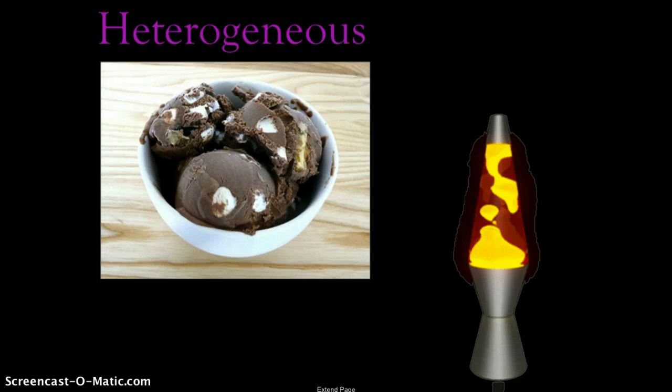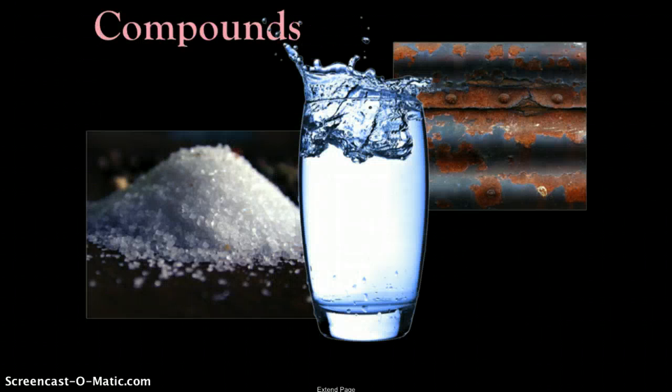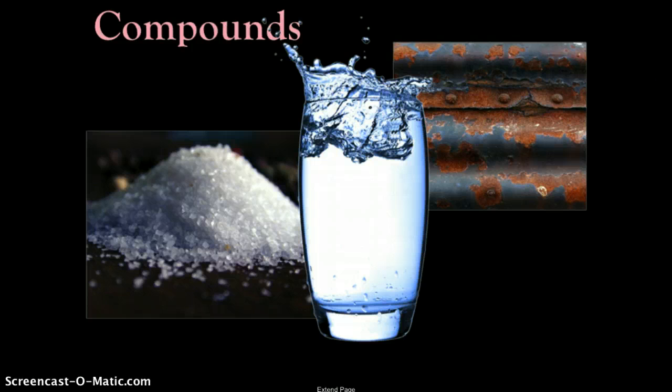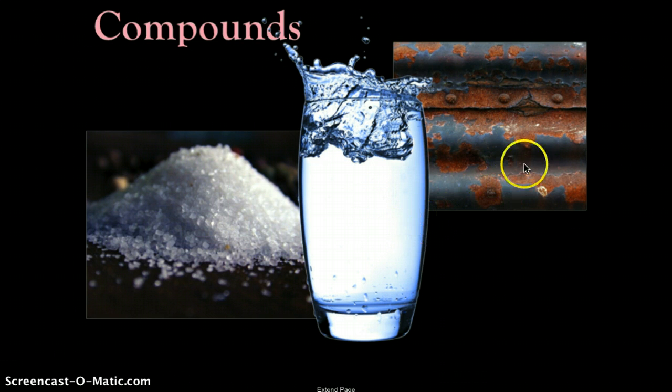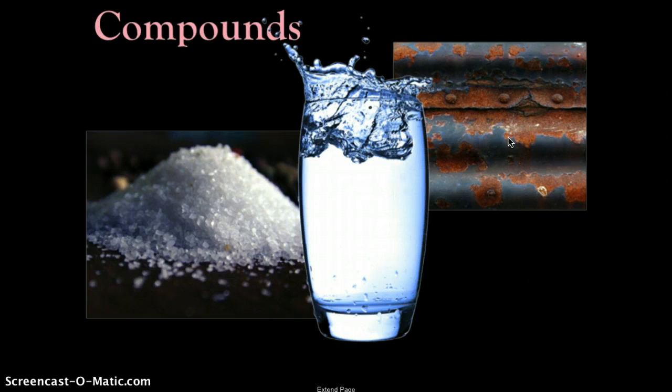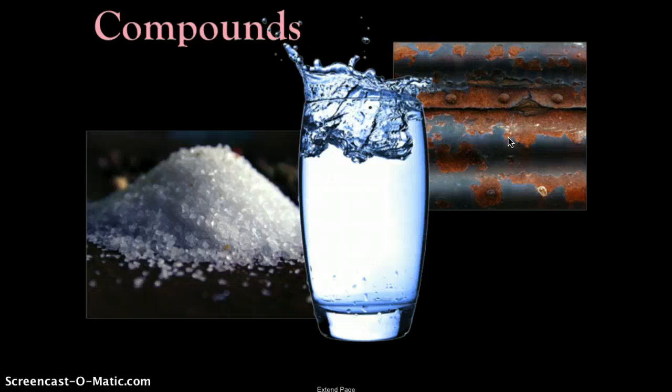Now when we look at compounds, we're looking at things that contain more than one element. So here we have a pile of salt - salt is made up of the elements sodium and chlorine. It's a compound, a joining of two or more elements. This nice fresh glass of water - H2O, hydrogen combined with oxygen. And here we have a nice example of rust - rust is iron oxide, iron in two atoms and oxygen in three atoms forming iron oxide.